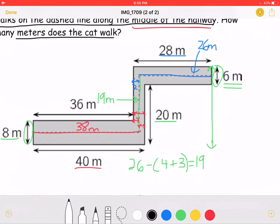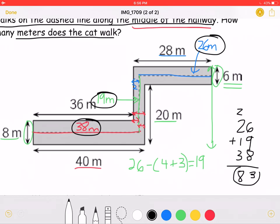Now, to get our answer, we must add 26, 19, and 38. And adding them, we should get a total of 83 meters.